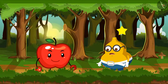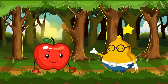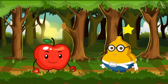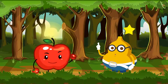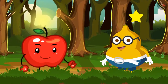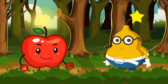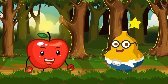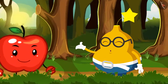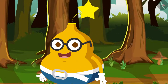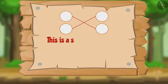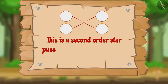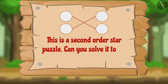Today Fruity says, 'Appy, I have some homework in which I have to solve some puzzles. Can you help?' Appy says, 'Yes, sure. What are the puzzles?' Fruity says, 'The first puzzle is a second order star puzzle. Can you solve it to get the two diagonal sums equal?'